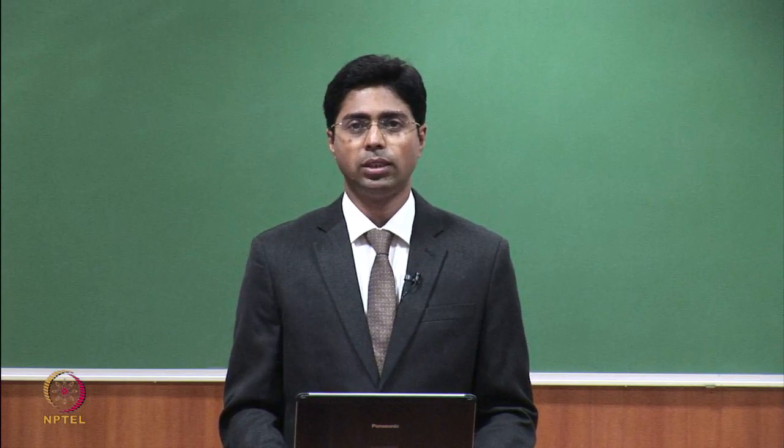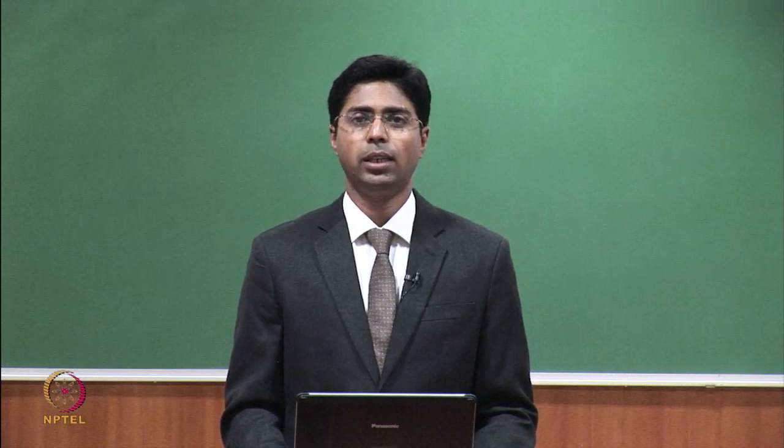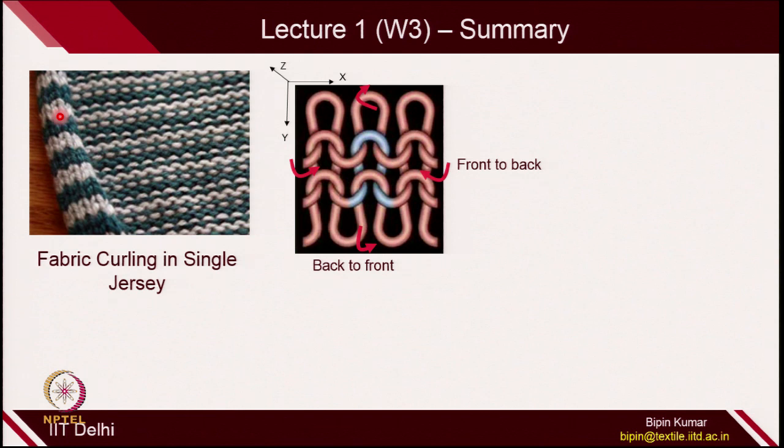Before we move further, we need to first understand why there was a need to have double flatbed knitting technologies. In the last lecture, I introduced you to a new topic related to knitting which was fabric curling. I demonstrated how a single jersey fabric, which is usually produced by single bed machines, used to curl from the edges. And the nature of curling is highly complicated.